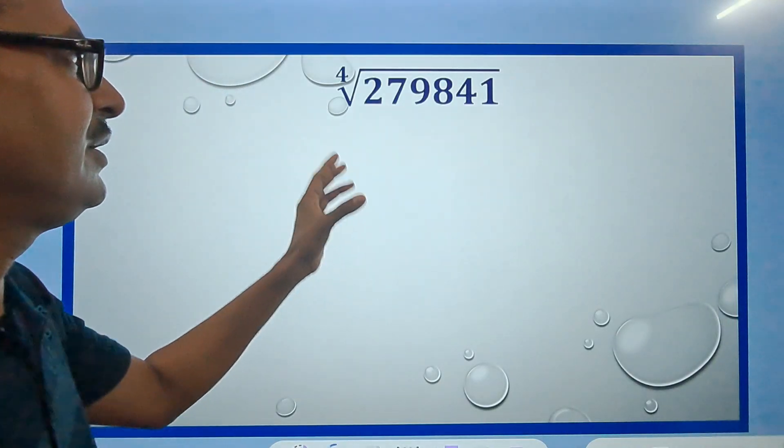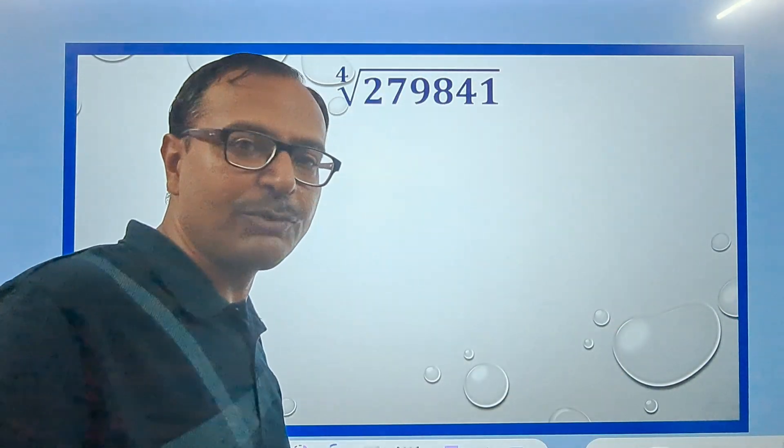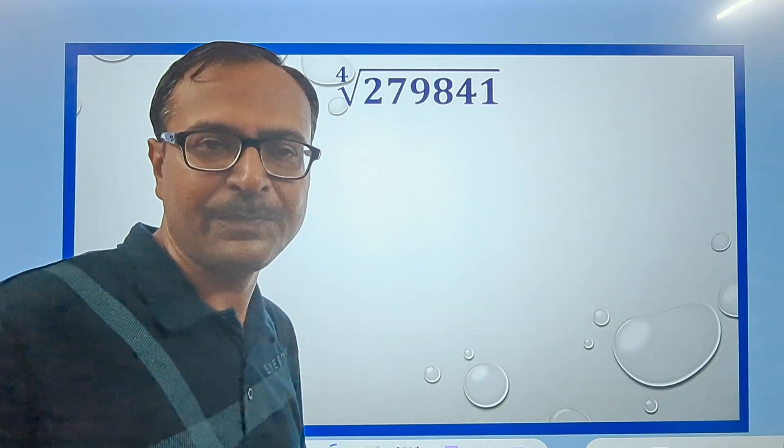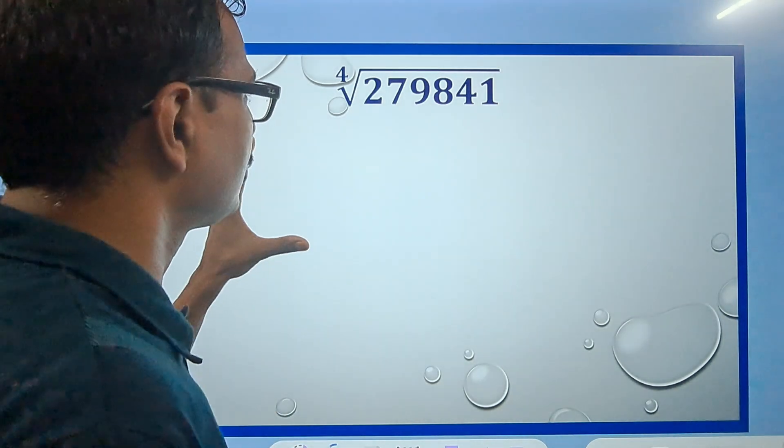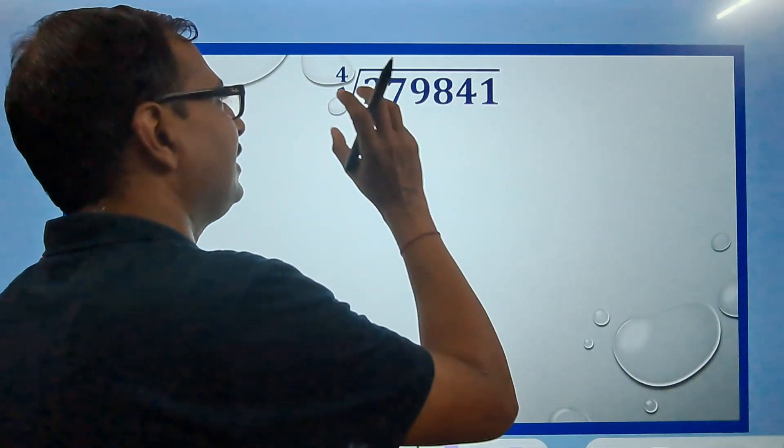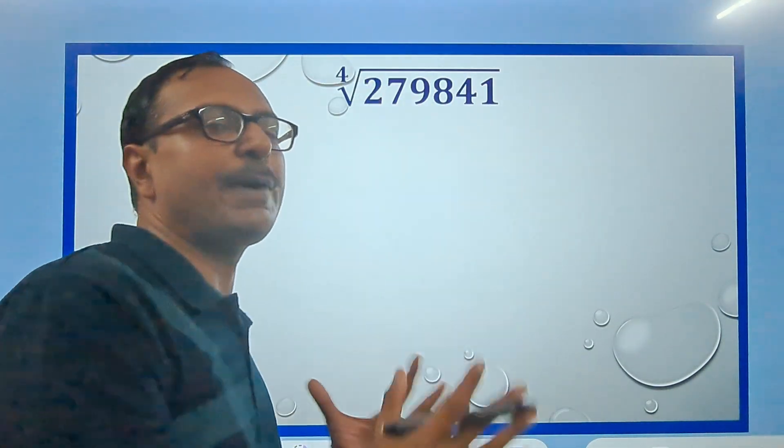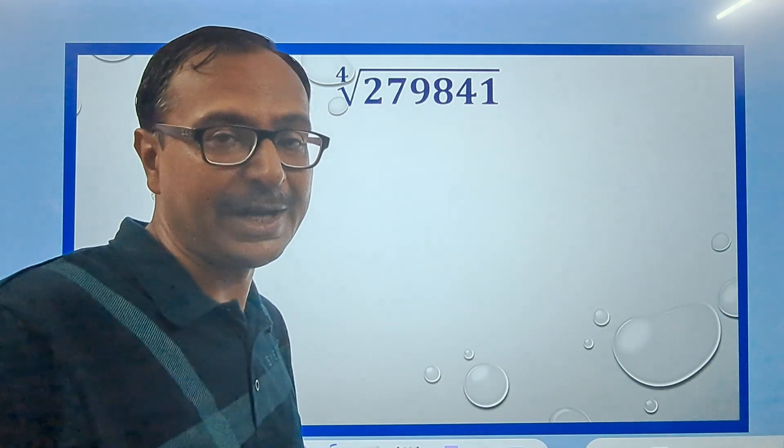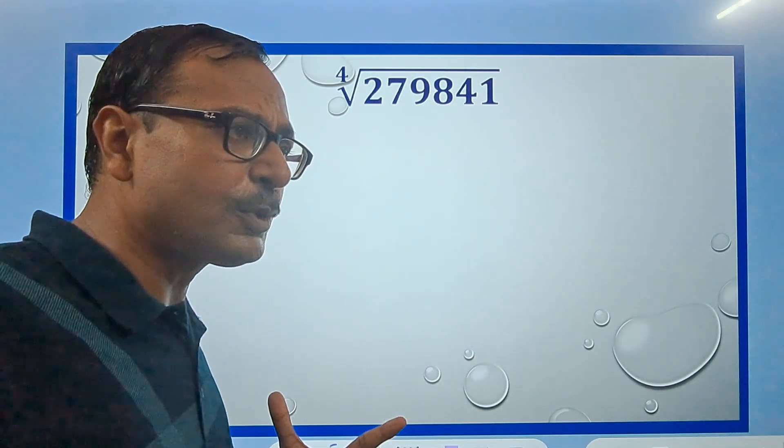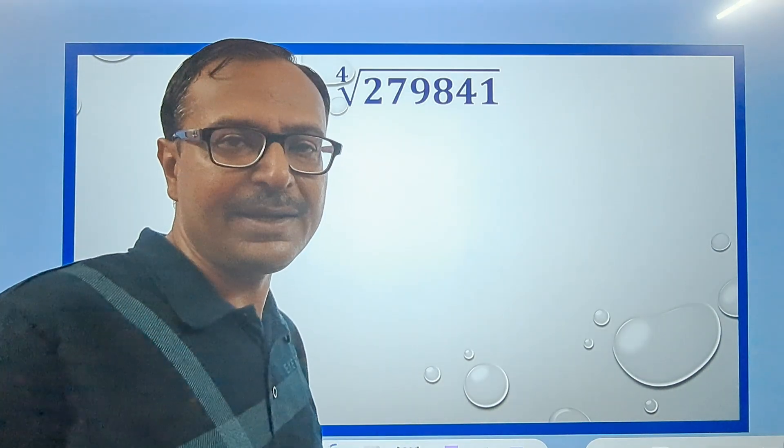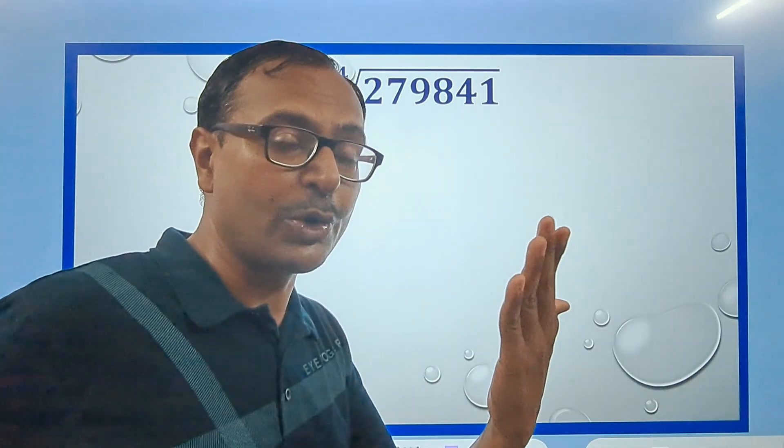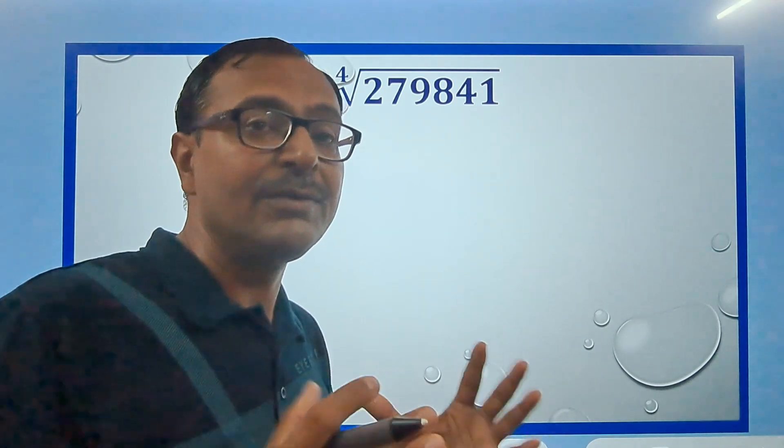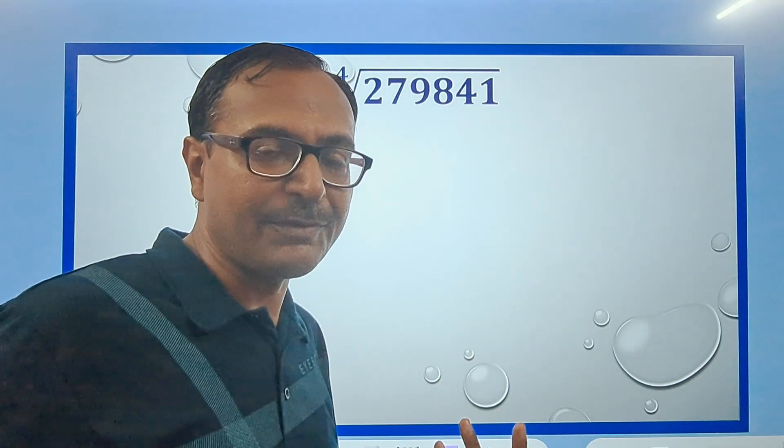So 279841. I have to find the fourth root of this number. So when you have to find the fourth root you have to go for square root first. Any number which is a perfect fourth power will always be a perfect square root also. That means like suppose you have 81. 81 is 3 raised to power 4. So the square root of 81 which is 9 is a perfect square number.